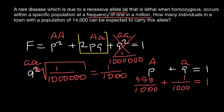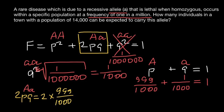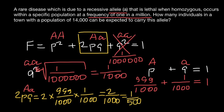The 2pq term in the formula gives us the frequency of the heterozygous genotype. So the frequency of heterozygous individuals equals 2 × (999/1,000) × (1/1,000). Since 999/1,000 is very close to 1, this simplifies to approximately 2/1,000, which equals 1/500. So we have found the frequency of the heterozygous genotype in this population.